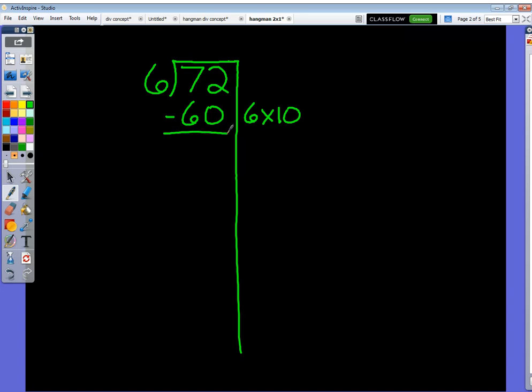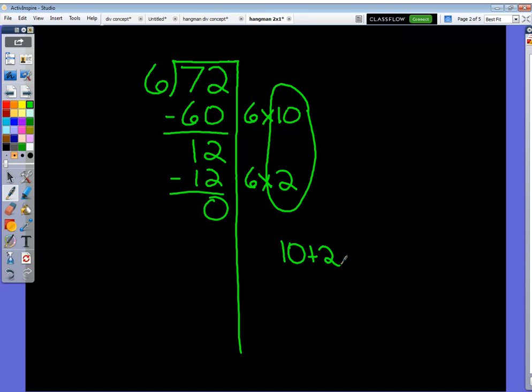72 minus 60 is 12. So I know that I'm only 12 away. How many 6's will it take to go that last 12? Two more. 6 times 2 is 12. 12 minus 12 is 0, which means I'm there. So how many 6's did it take altogether? It was 10 6's plus 2 6's. So that means that it was 12. 72 divided by 6 equals 12.